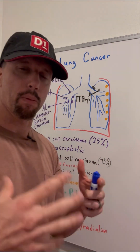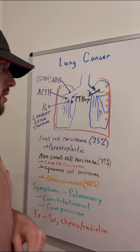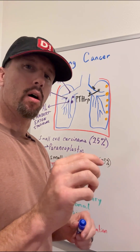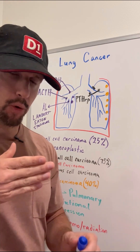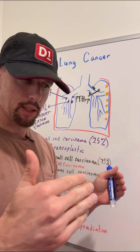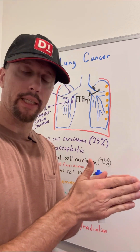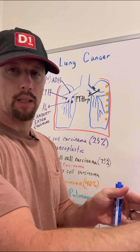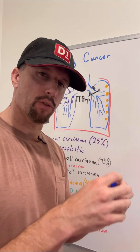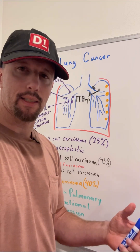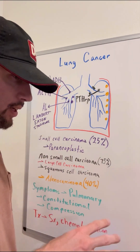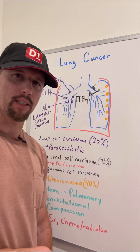Another paraneoplastic syndrome is Lambert-Eaton syndrome, where small cell carcinoma cells cause an increase in antibodies that attack the calcium channels at the axon terminal of the neuromuscular junction. Calcium channels there cause an influx of calcium with an action potential, which triggers the release of acetylcholine into the neuromuscular junction. It responds on the muscle cell via nicotinic acetylcholine receptors. If antibodies attack those calcium channels, you don't get neurotransmitter release, resulting in muscle weakness, often in the legs and proximal muscles. Small cell carcinoma is very aggressive and typically treated with chemotherapy rather than surgery, since the small cells are distributed throughout.